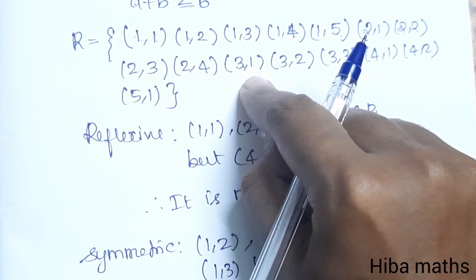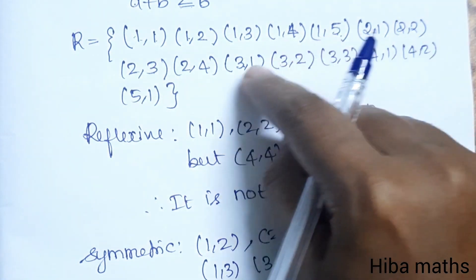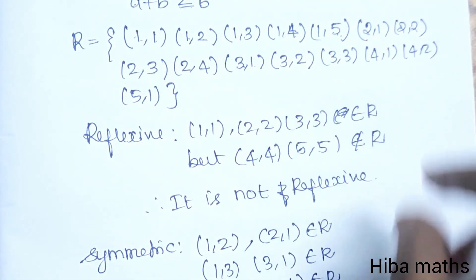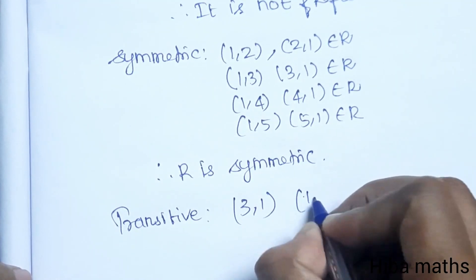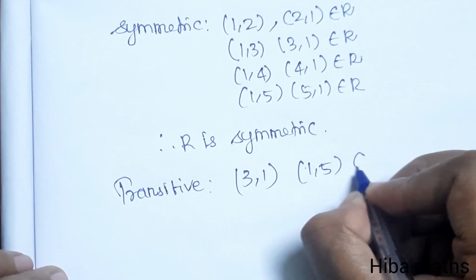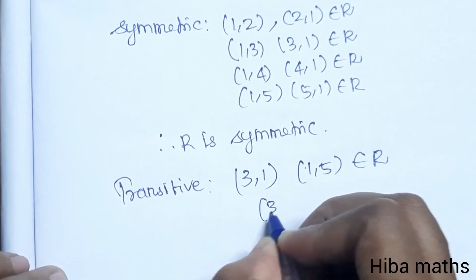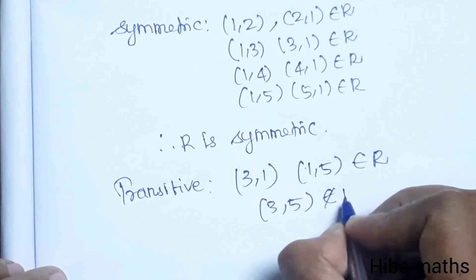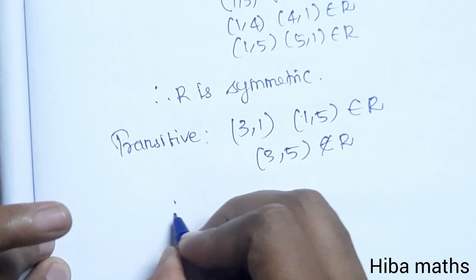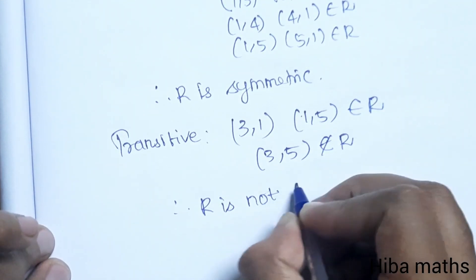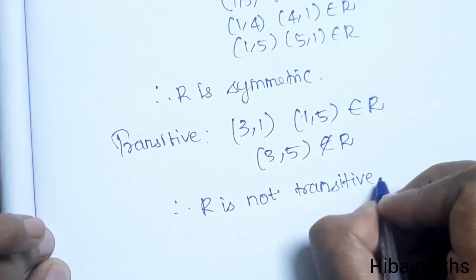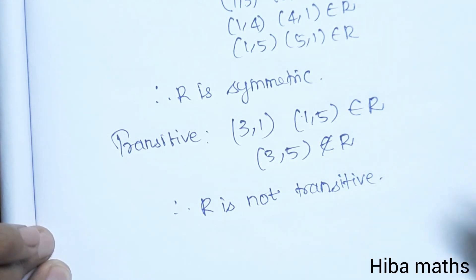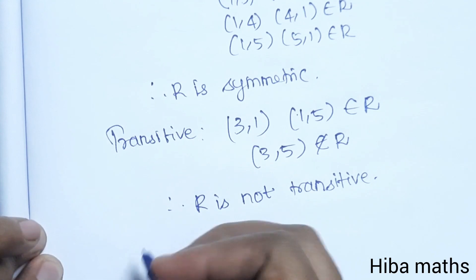For transitive: Consider (3,1) and (1,5). Both are elements of R. But for transitive, (3,5) should be in R. However, 3+5=8, which is not ≤6. So (3,5) is not an element of R. Therefore, R is not transitive.